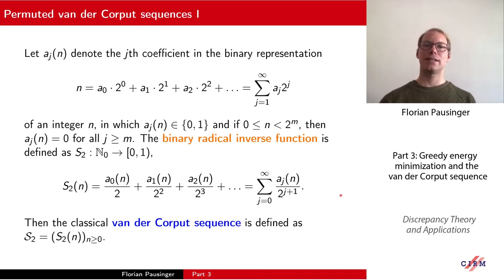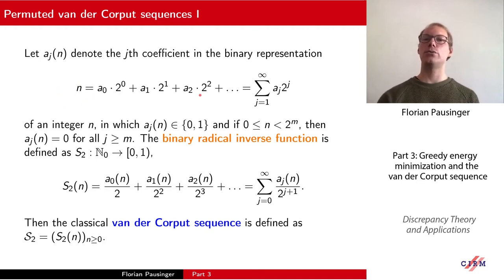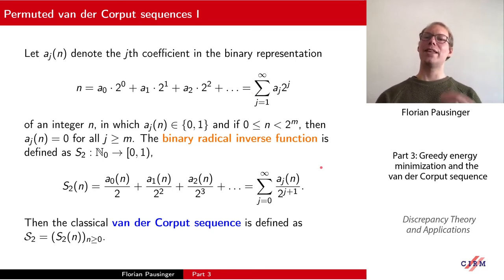To do this, I need to introduce some concepts. I already mentioned in part one that van der Corput sequences are one of the most famous uniformly distributed sequences. The way you define a van der Corput sequence is as follows: you start with an integer n, write it in base-2 representation, and then you flip it at the decimal point.